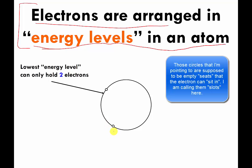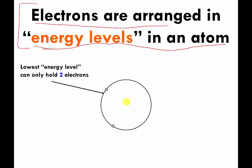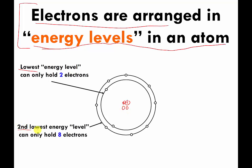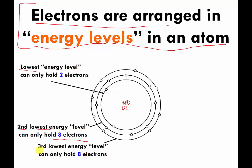Think of the atom as being like a concert hall. There's a stage here and there's seating. This is the first row, and the first row has two seats, which means it can hold two electrons — this is the lowest energy level. On the stage there are protons and neutrons. The second lowest energy level — think of that as the second row — can hold eight electrons, and the same is true for the third lowest energy level. First row holds two electrons, second and third rows hold eight electrons. We are not going to go beyond the third energy level.